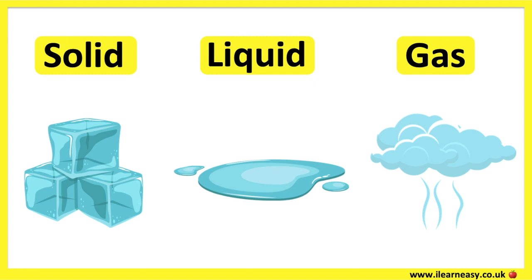Matter can change in different ways. There are six ways in which matter can change. Now let's go through the six changes of matter.